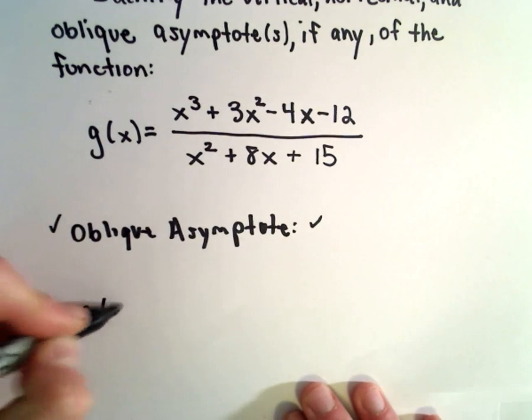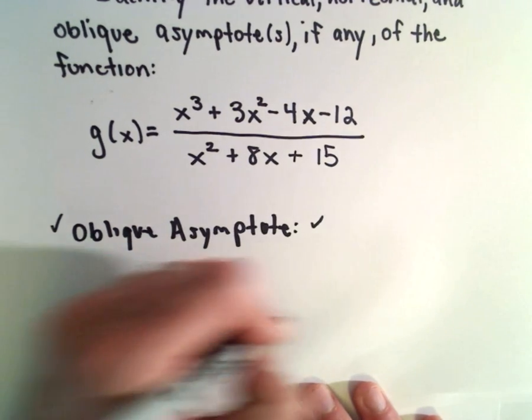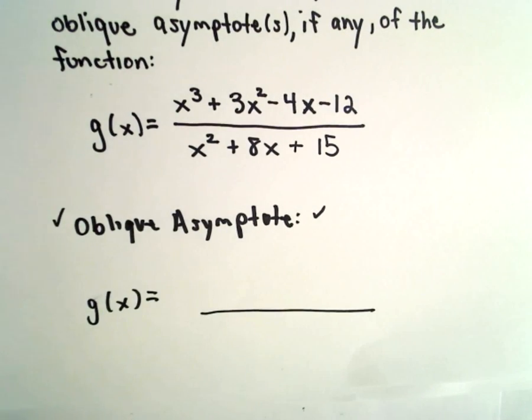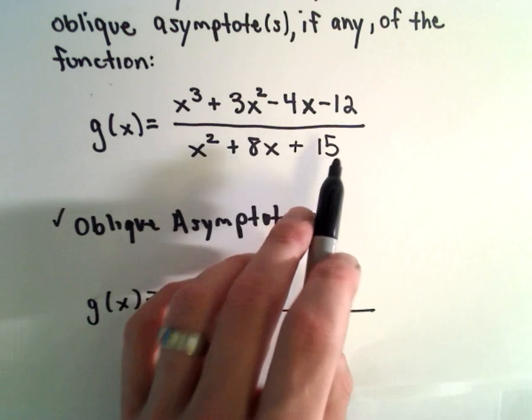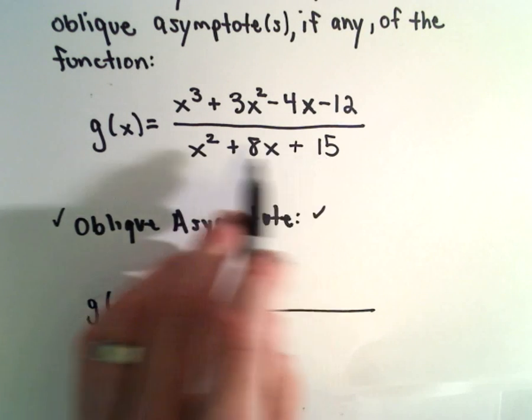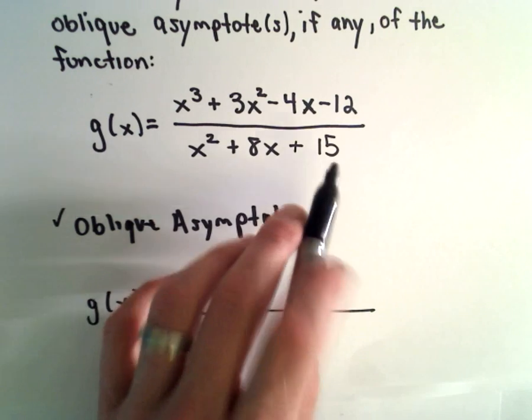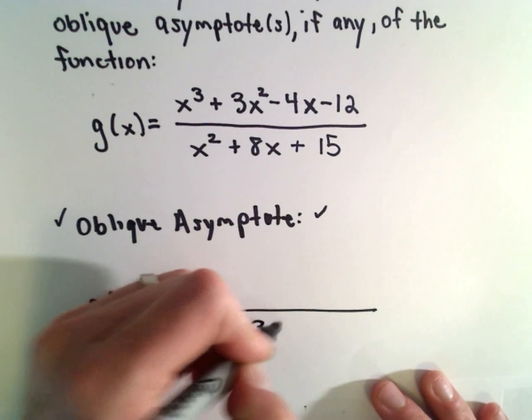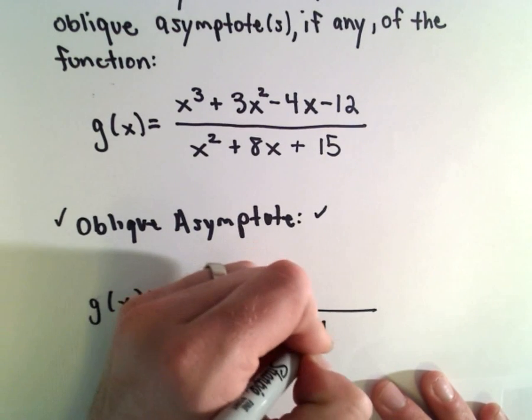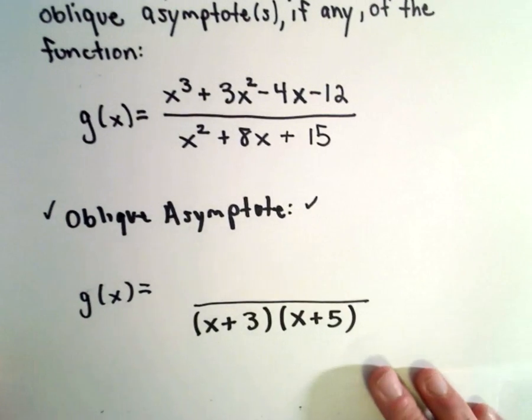I'm going to factor the denominator first because that one looks easier to me. We've got a quadratic, our x squared has a coefficient of 1, so we need two numbers that multiply to 15 but add up to 8. How about 3 and 5?